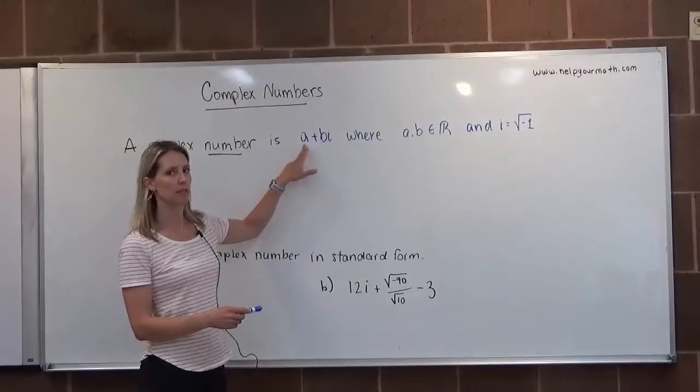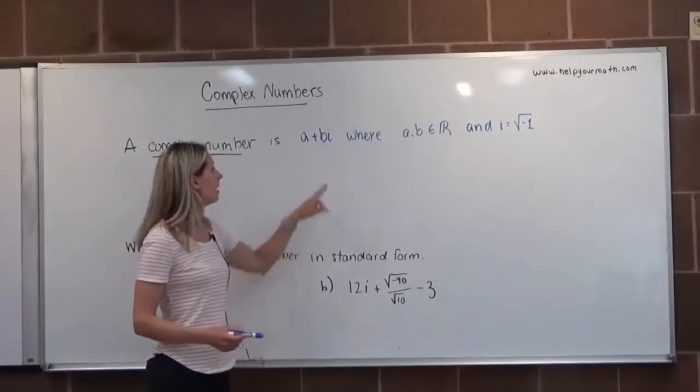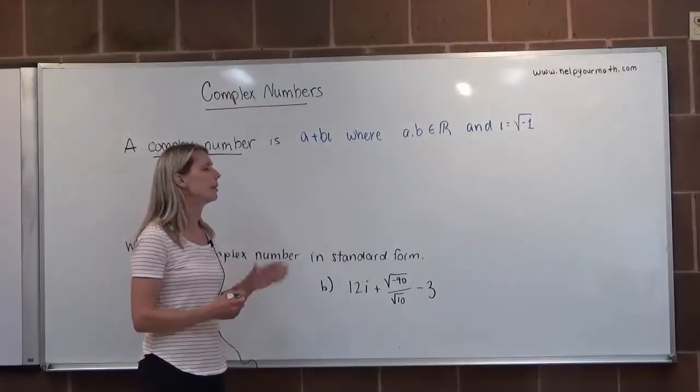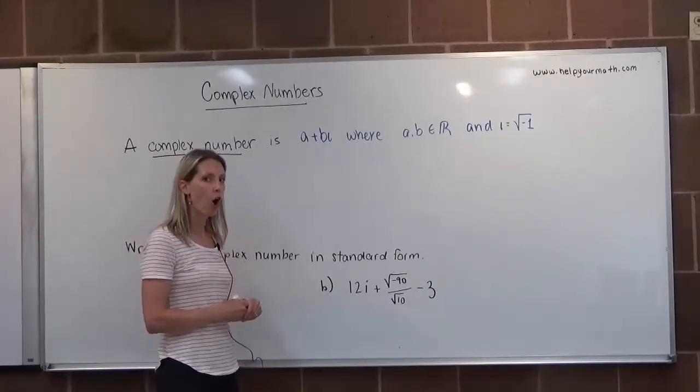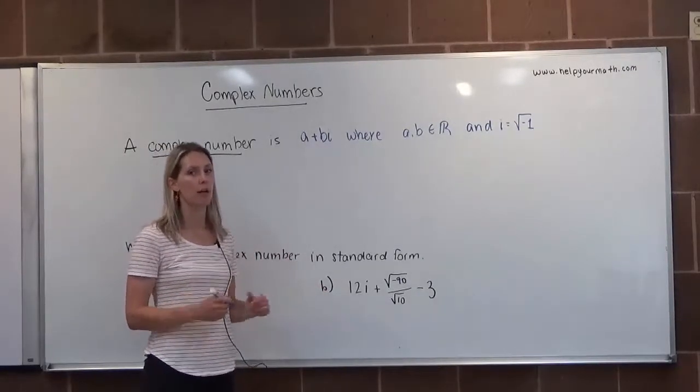If a is equal to zero, then the number is purely imaginary. If b is equal to zero, then the number is a real number. So all real numbers are also complex numbers.